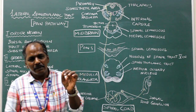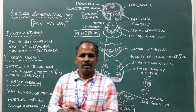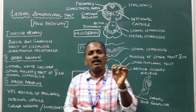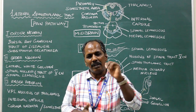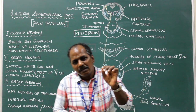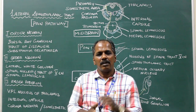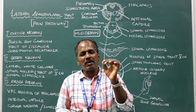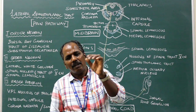Damage to the lateral spinothalamic tract causes loss of pain and temperature sensations below the level of the lesion. Damage to the ventral spinothalamic tract causes loss of pressure and crude touch below the level of the lesion.